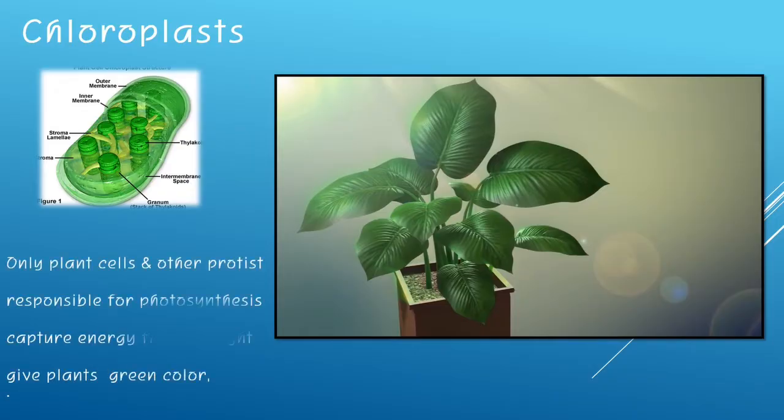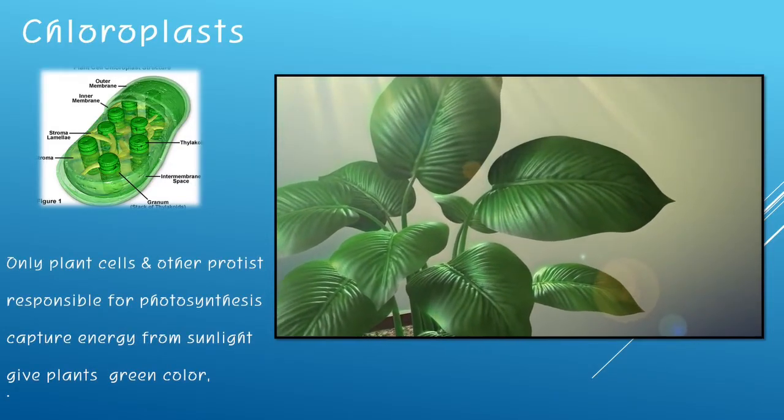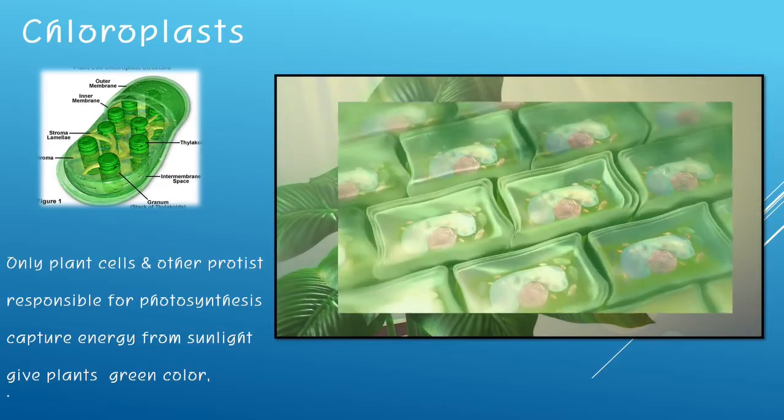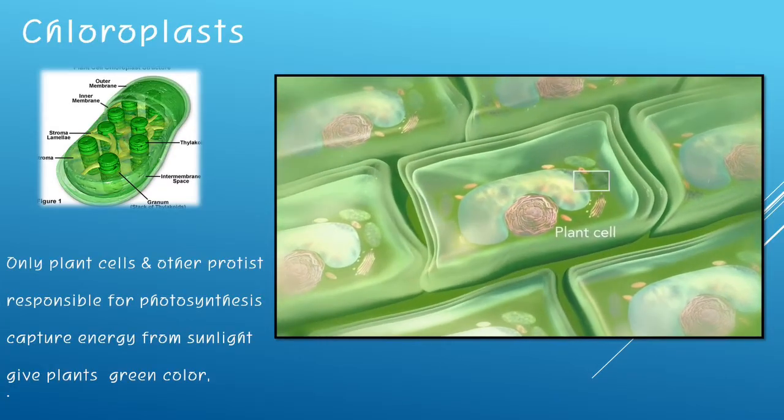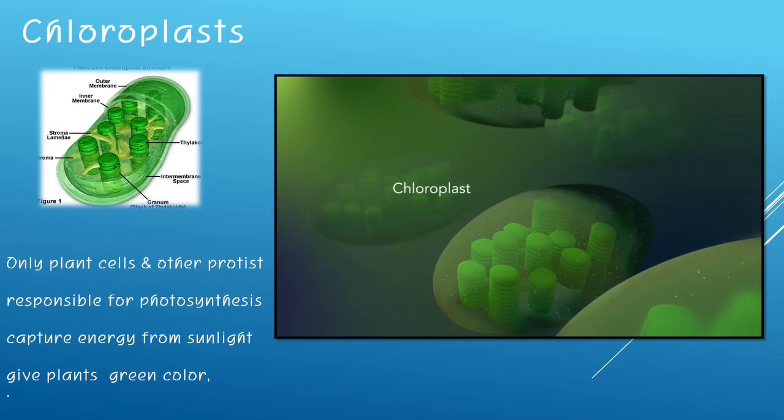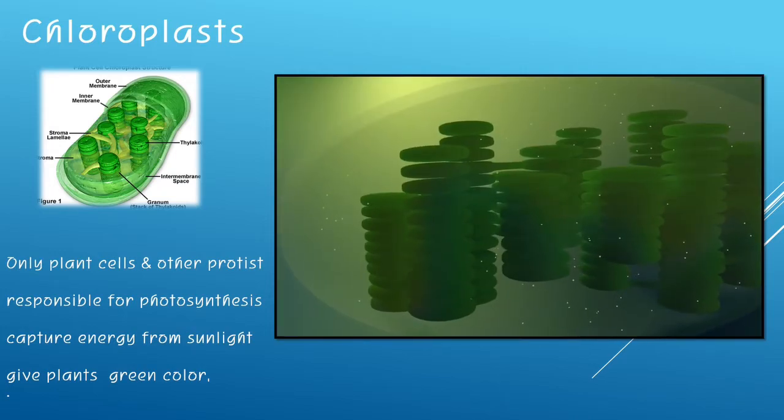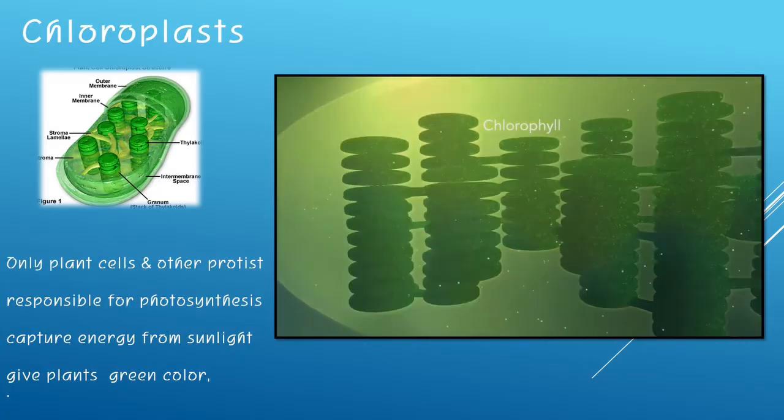Chloroplasts are only present among plant cells and other protists. They are responsible for photosynthesis, and this is where photosynthesis is happening. They capture energy from sunlight and give plants their green color. It becomes green because of the green pigments called chlorophyll.